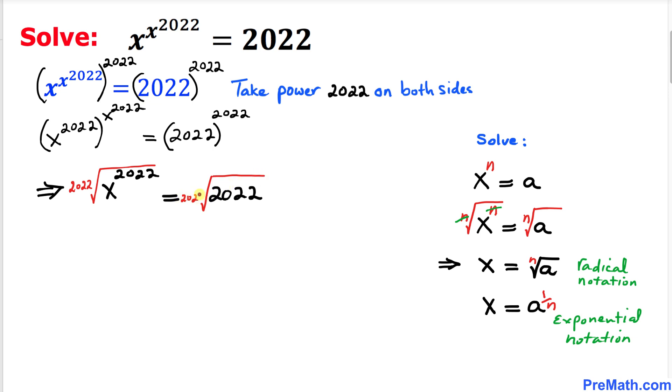Here this index and this, they undo each other, so we simply got x equals the root of 2022 with the index.